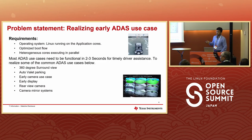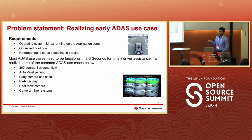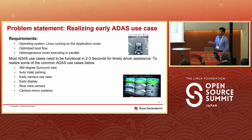On the problem statement: basically, it's to get the ADAS use case up and running as soon as the car starts — on the order of 2 to 3 seconds. Linux is expected to drive and control all the hardware accelerators and processing cores. Of course, we have heterogeneous cores to execute in parallel. Some of the most commonly used ADAS use cases that need early boot time are 360-degree surround view for parking, auto valet parking, early camera for backup reverse, early display, and camera mirror systems. Typically we get boot time optimization requests on these use cases.